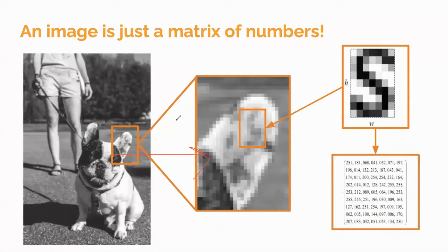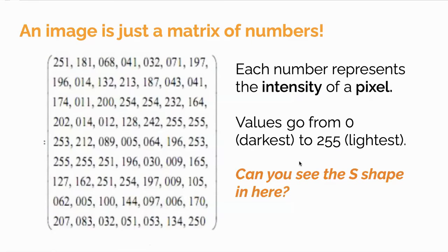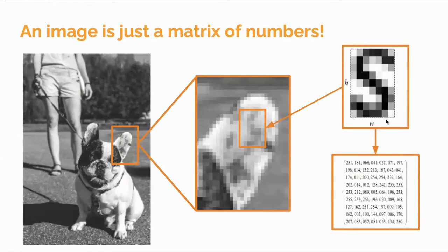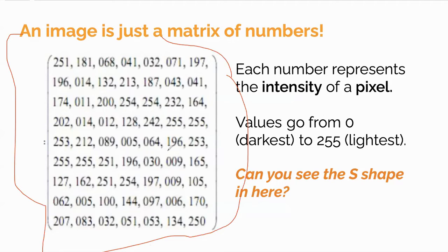If we zoom in far enough we start to see the pixelation, where each individual square is represented by a number defining the brightness intensity. In this black and white scenario, it's purely like the brightness intensity. We can see an artist representation of a vague S-shape in the dog's ear. Looking at the matrix of numbers, we see this matrix that represents that S, defined with brightness intensity values for each pixel — darker values represented by zeros, since less light means less brightness.